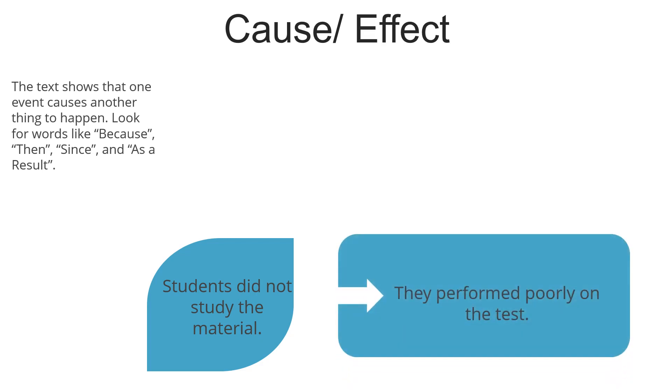Let's put this into an example. Students did not study the material. This is the cause. And the effect of this cause is that they performed poorly on the test. As we see, one thing, which is here, students did not study the material, caused another thing to happen, which is they performed poorly on the test.